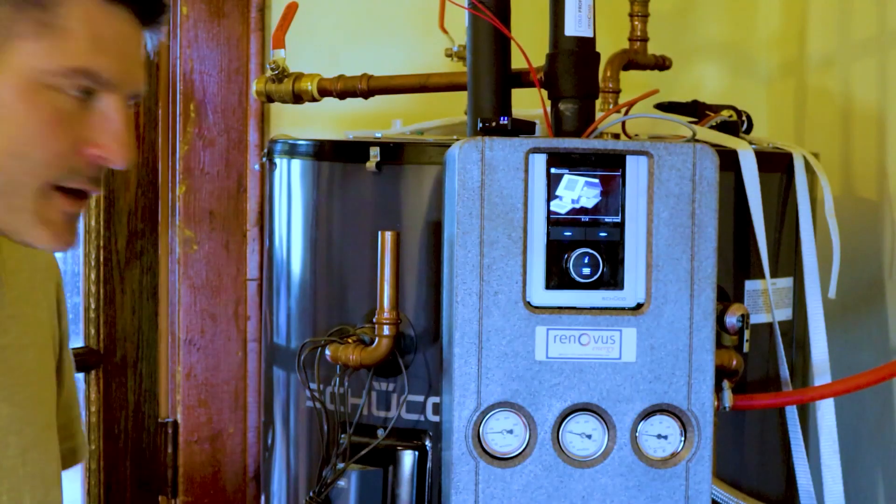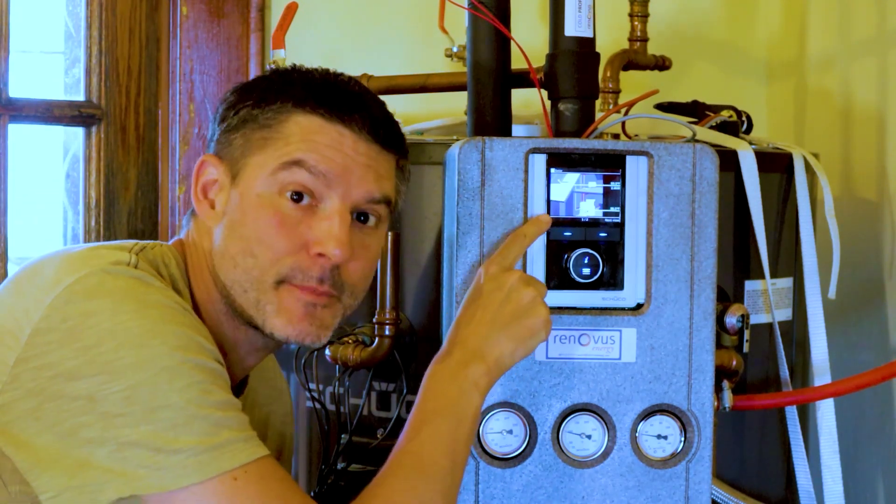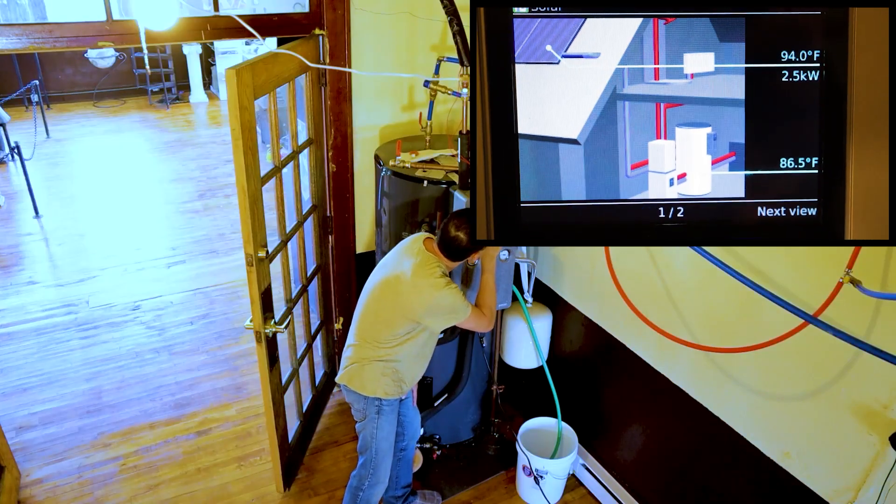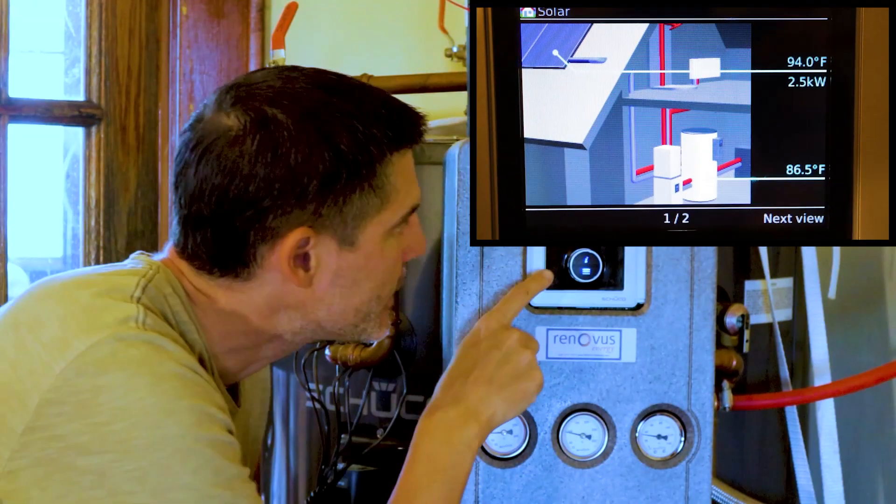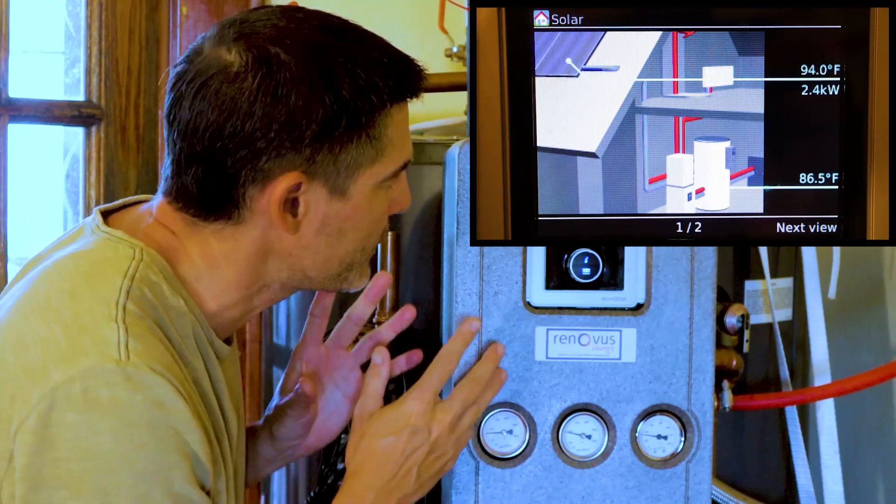Everything is filled up and hooked up. It's about 10:30 a.m. Let's see what's going on right about now. If we look at our little computer, it says that the temperature up on the roof, where the manifold and vacuum tubes are, it's about 84 degrees Fahrenheit. And the temperature inside the water tank is about 86.5 currently.